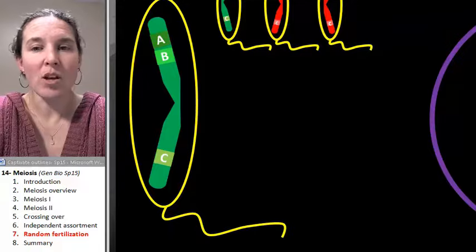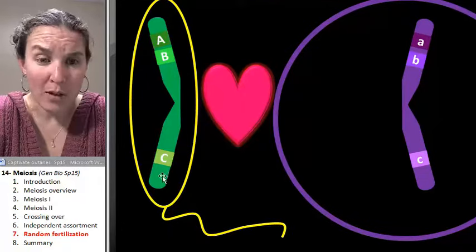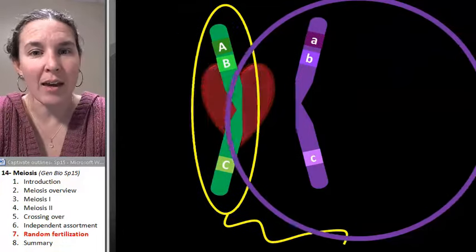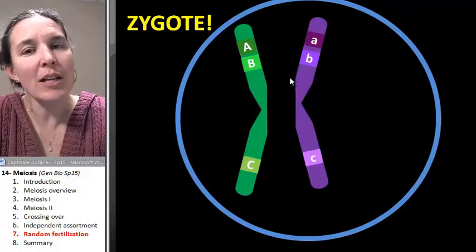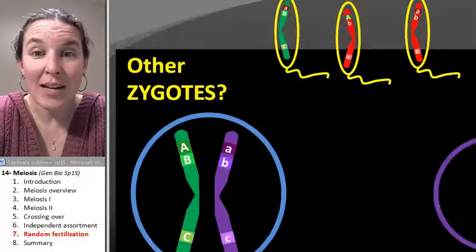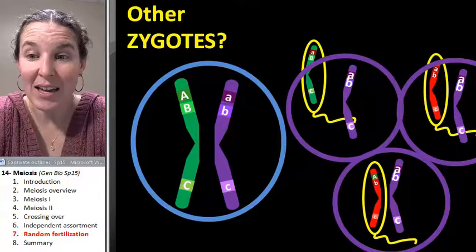If you have this little, this sperm was the lucky sperm that made it to this egg, you're going to end up with a fertilized zygote that has genetics that look like this. If you randomly pick a different set of eggs and sperm,